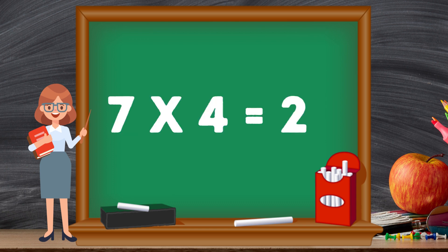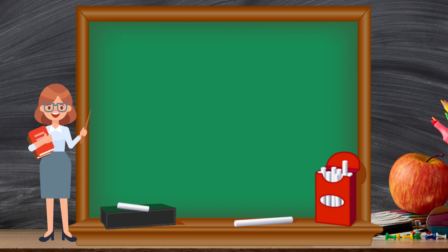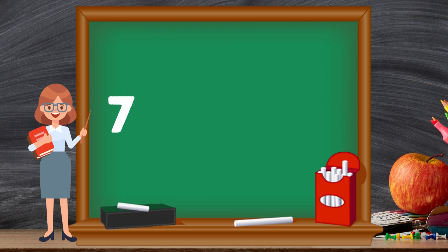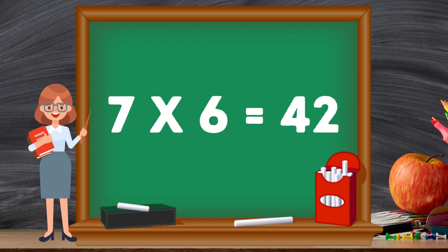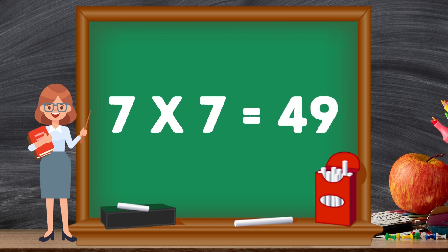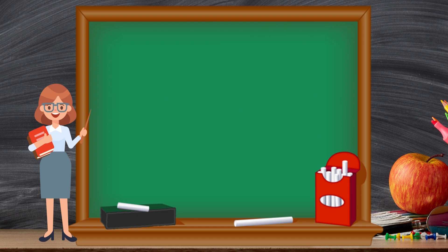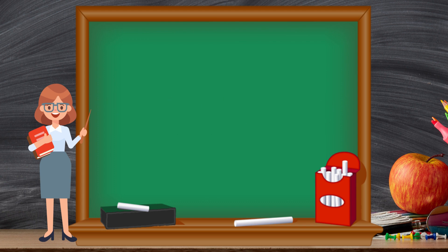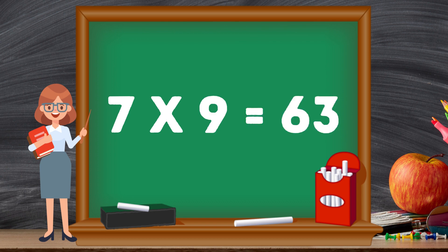7 fours are 28. 7 fives are 35. 7 fives are 35. 7 sixes are 42. 7 sixes are 42. 7 sevens are 49. 7 sevens are 49. 7 eights are 56. 7 eights are 56. 7 nines are 63. 7 nines are 63.